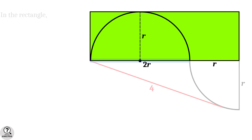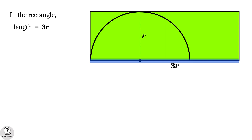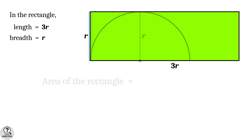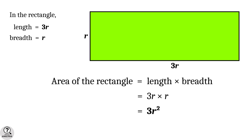Now consider the rectangle. Clearly, the length is equal to 2R plus R, equal to 3R. And the breadth of the rectangle is the same as the radius, which is equal to R. Then the area of the rectangle is equal to the product of length and breadth, equal to 3R into R, that is equal to 3R squared. So we have to find the value of the radius R.